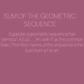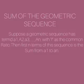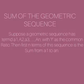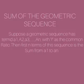Sum of the Geometric Sequence. Suppose a Geometric Sequence has terms a1, a2, a3, and a sub n, with r as the common ratio. Then the first n terms of this sequence is the sum from a sub 1 to a sub n.